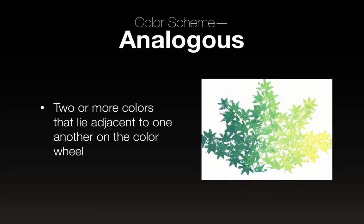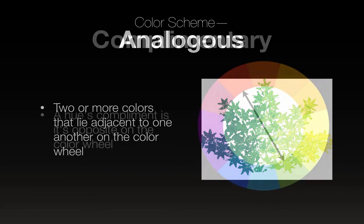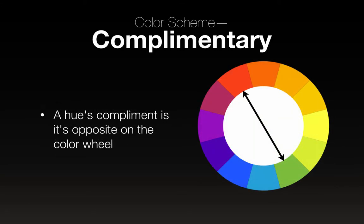Something like this maple leaf design that goes from green to lime green to yellow — that's an analogous color scheme. Complementary is basically the opposite: a hue's opposite on the color wheel. So green and red, purple and yellow, blue and orange, and so on.